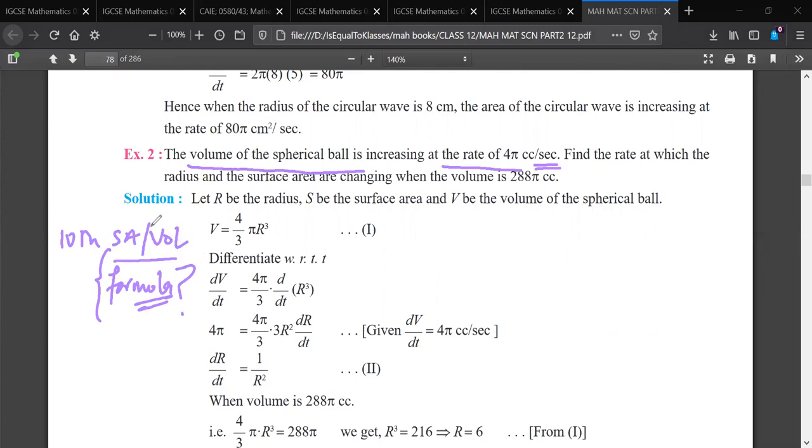If the 10th class is not clear, then it will be painful. Then we have to leave this topic. So let's look at the volume of spherical ball. What is the volume of spherical ball? So 4 by 3 π r³. Find the rate at which the radius and the surface area are changing when the volume is 288π cc.